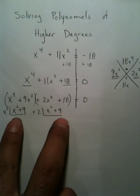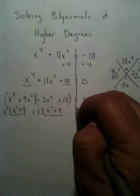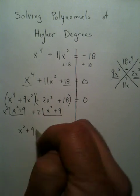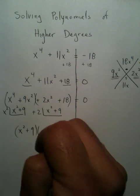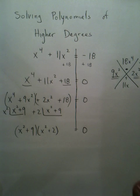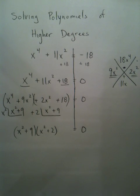Now, you're doing this correct because these two terms match. x² plus 9 and x² plus 2 are now two factors of this higher degree polynomial.